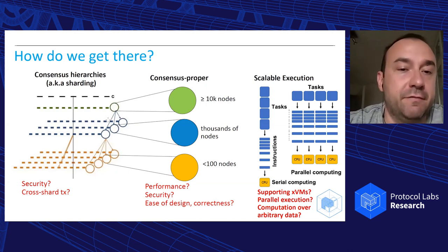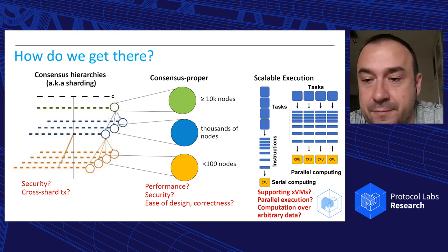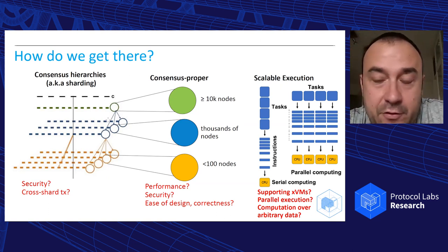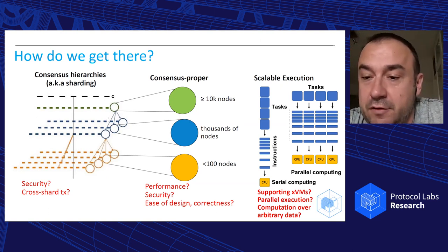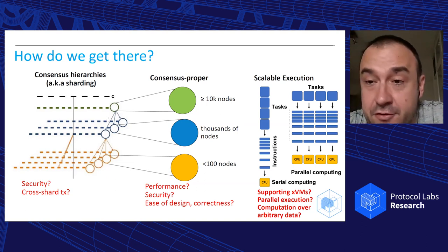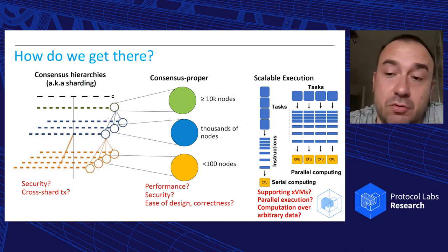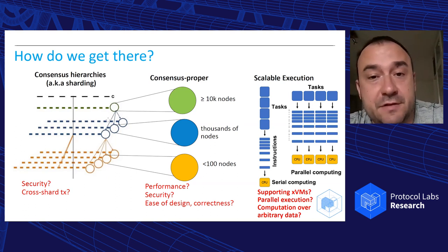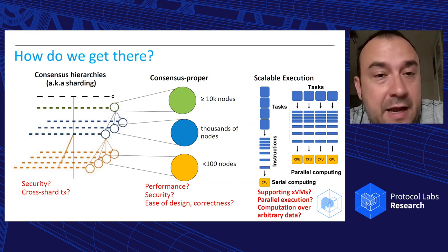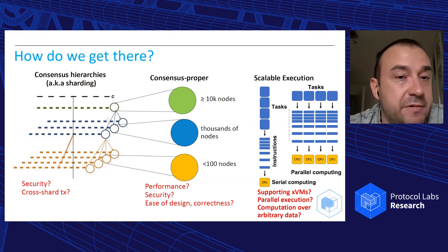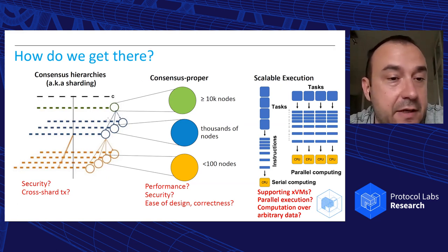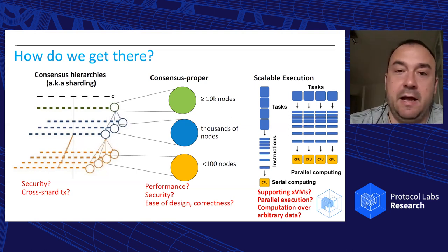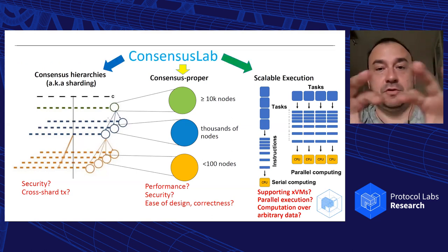There is also the need to support WebAssembly virtual machines, Ethereum virtual machines, and other virtual machines. If we write smart contracts instead of simple cryptocurrency transfers, the situation gets complicated. There is a lot of work to be done, and essentially Consensus Lab is focusing on three things. These are the three vertical pillars of Consensus Lab.